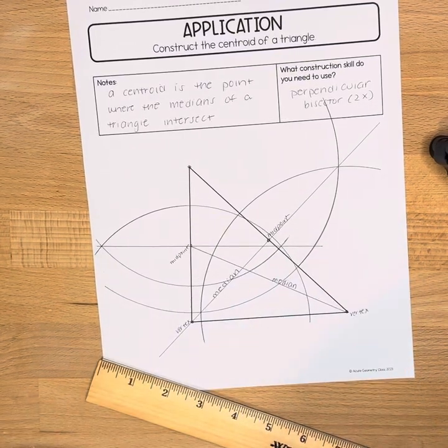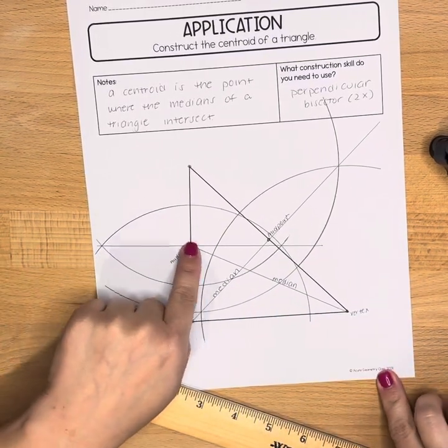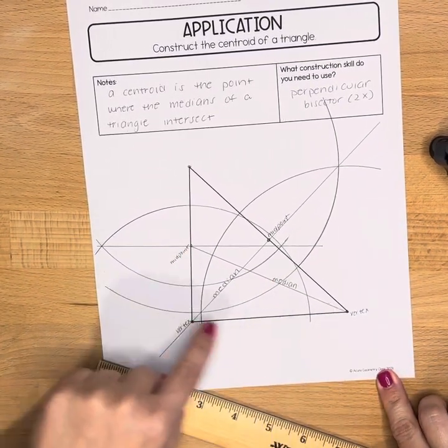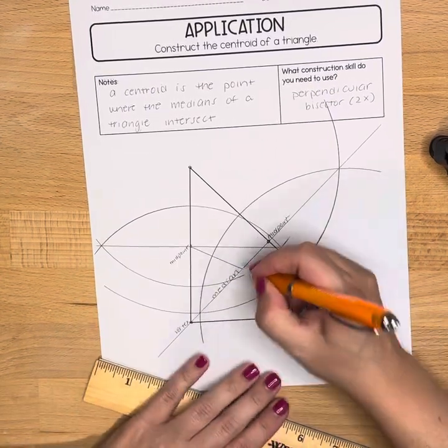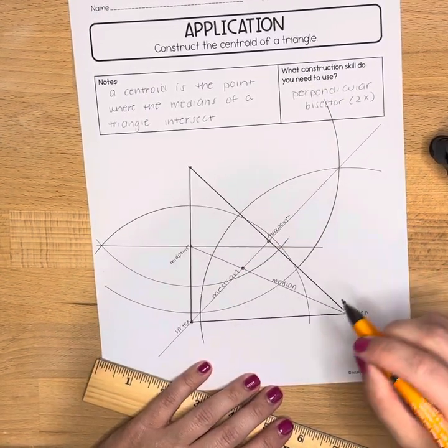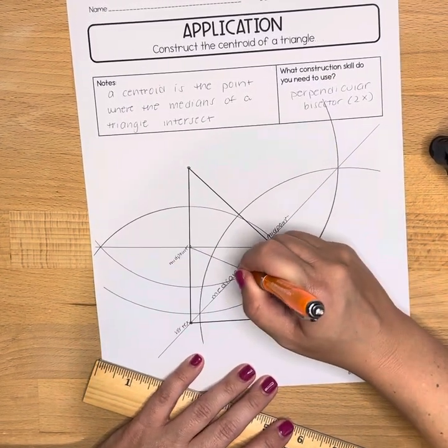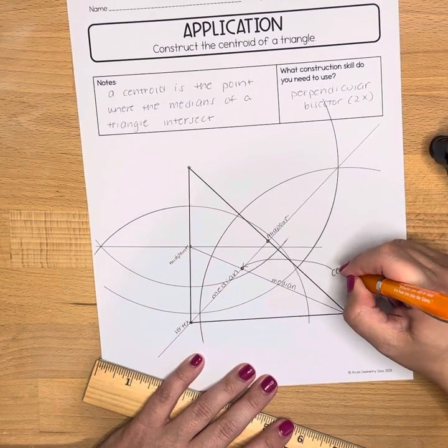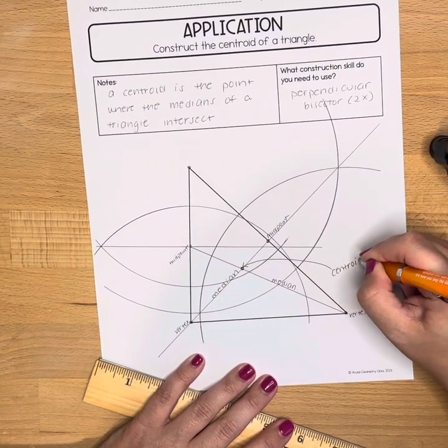The centroid is the point where those two medians intersect. So here's one median. Here's the other median. This point where they intersect. That is called our centroid of the triangle.